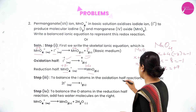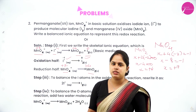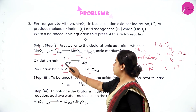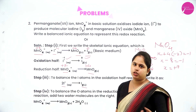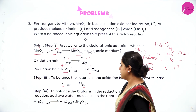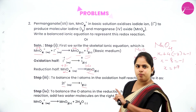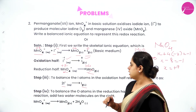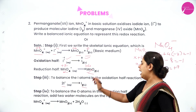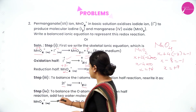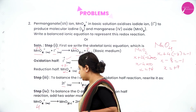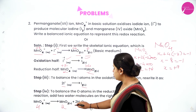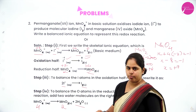To balance the iodine atoms in the oxidation half reaction: on the reactant side there is 1 atom and on the product side there are 2 atoms, so we multiply the reactant by 2, giving 2I⁻ → I₂. For the reduction half reaction, there is 1 manganese atom on each side, so no multiplication is needed. Now balance the oxygen atoms in the reduction half reaction: MnO₄⁻ has 4 oxygen atoms and MnO₂ has 2, so we add 2 molecules of water on the product side.